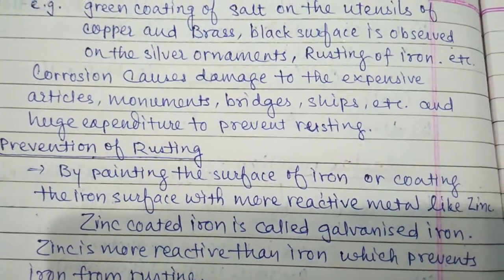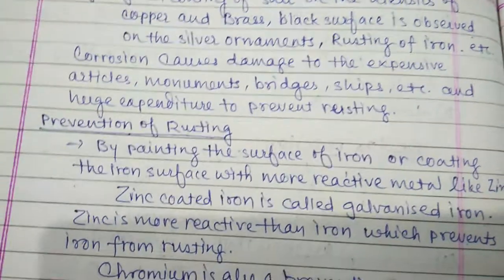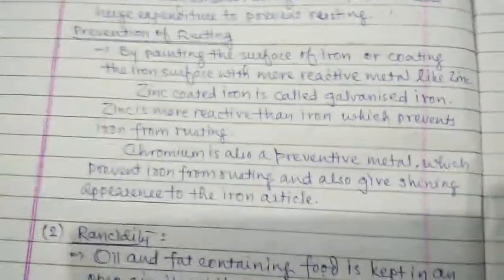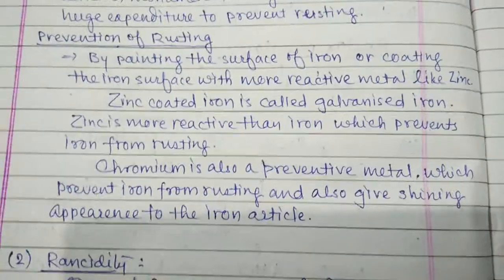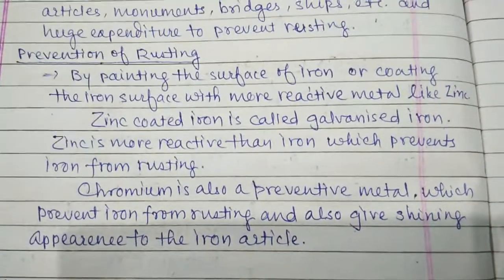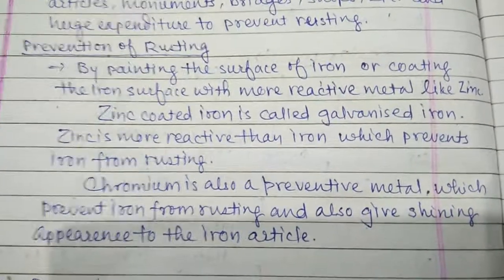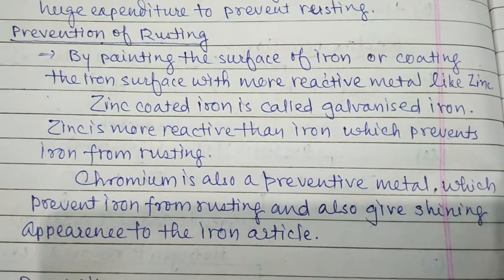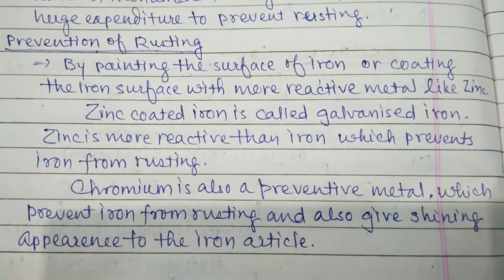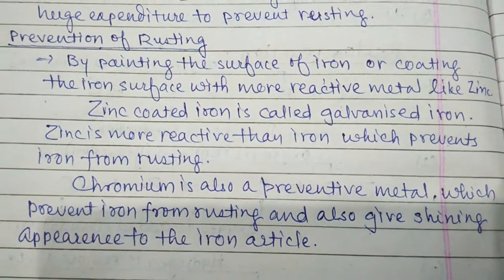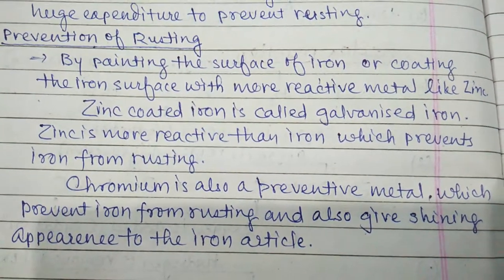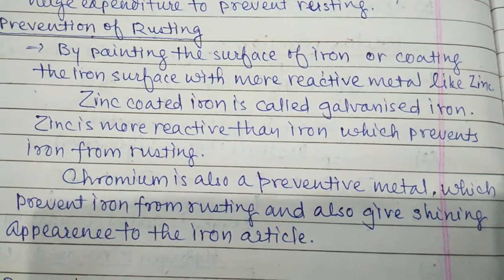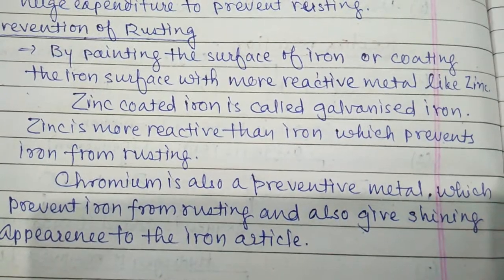Corrosion causes damage to expensive articles, monuments, bridges, ships, etc., and requires huge expenditure to prevent rusting. The simplest way to prevent rusting is by painting the iron surface with oil paint, or coating it with a more reactive metal like zinc, tin, or chromium. Zinc-coated iron is called galvanized iron.